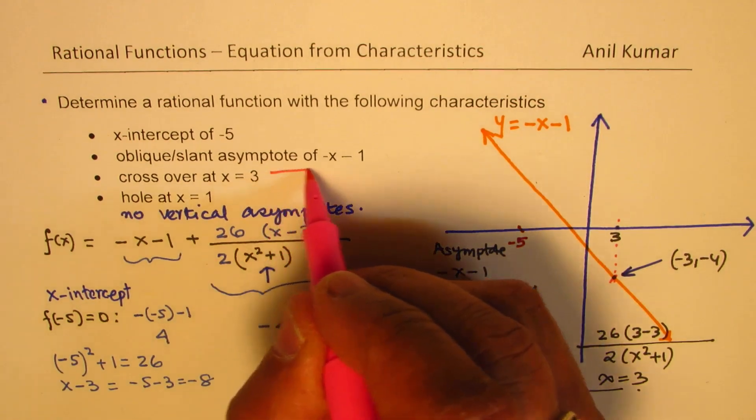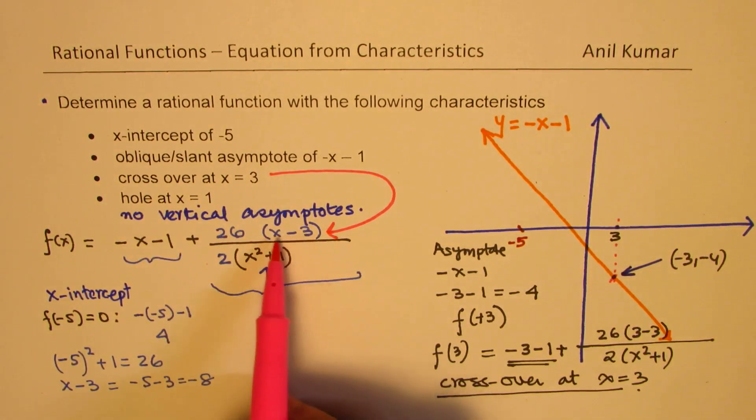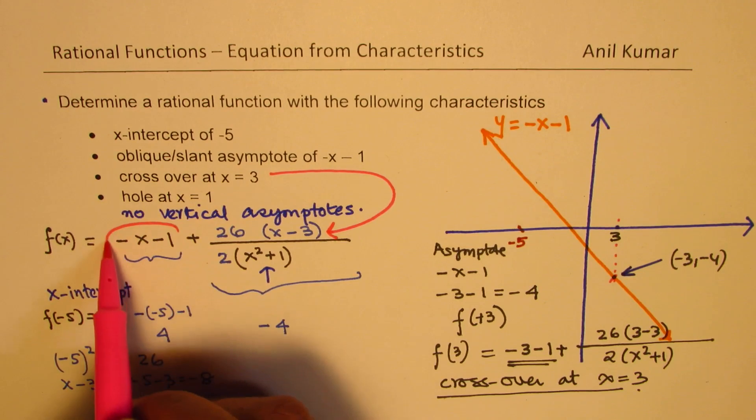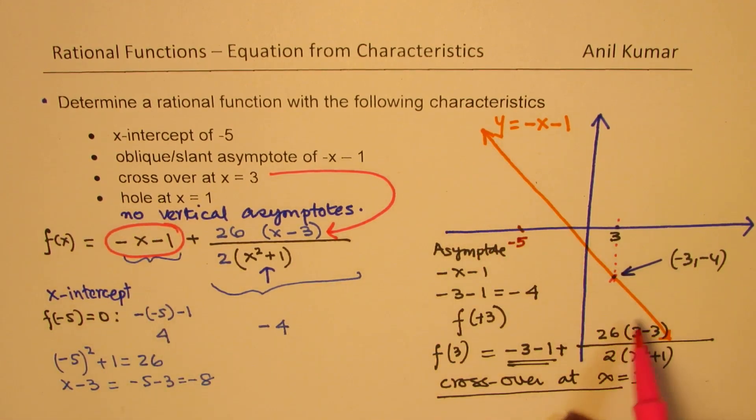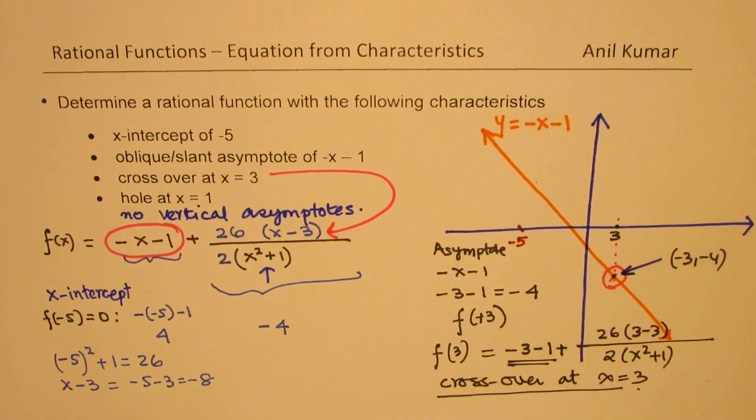So look here. So to meet this condition, crossover at 3, I have a factor x minus 3 here. So that will make it 0. And what I get is the value of the oblique asymptote. So they have the same point, which is right there. You get the idea.